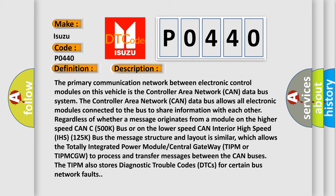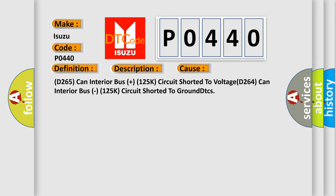This diagnostic error occurs most often in these cases: D265 — CAN interior bus plus 125K circuit shorted to voltage; D264 — CAN interior bus 125K circuit shorted to ground DTCs.